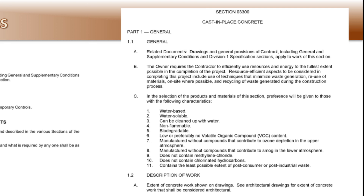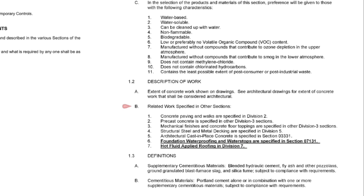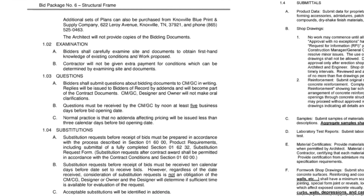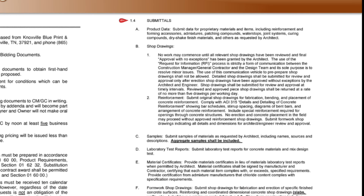Go ahead and try to estimate the cost of doing that one statement. There is also another area of related work specified in other sections, listing seven different other sections to review. At 1.3 definitions, they give the definition for supplementary cementitious materials and cementitious materials. Note that bidders are to carefully examine the site and documents to obtain first-hand knowledge of existing conditions — this relieves the owner of responsibility for existing conditions that could have been observed by visiting the site. Substitutions are outlined and will be identified in an addendum to all bidders. Submittals and shop drawing requirements shall be submitted to the architect, and no work may commence until approved by the architect.